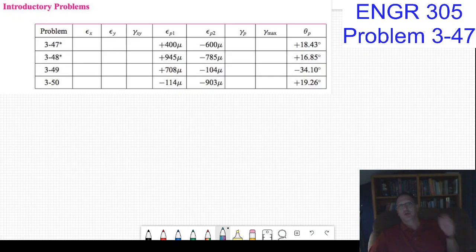This is a good problem. So what do we know? We know that the principal strain in the one direction, epsilon_p1, is 400 micro, and the principal strain in the other direction, 90 degrees from that, is minus 600 micro.